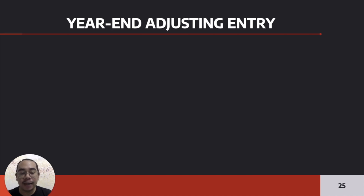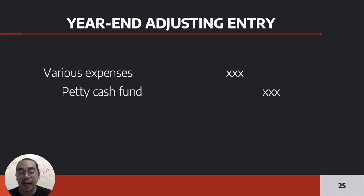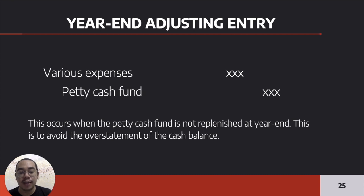What if it is December 31 and the fund has not been replenished? You need to make a year-end adjusting entry: debit various expenses, and credit petty cash fund — not cash, since there was no replenishment. This avoids the overstatement of the cash balance. If you do not make this entry, the petty cash fund will be overstated and expenses will not be recorded.